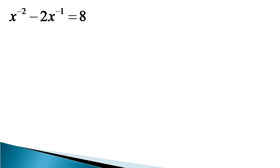we can multiply both sides by x squared and get a quadratic equation, or we can express x raised to the power minus 2 and x raised to the power minus 1 as 1 by x squared and 1 by x, and then proceed for solving. But the best way is just to observe that this equation is a quadratic equation itself in x raised to the power minus 1.